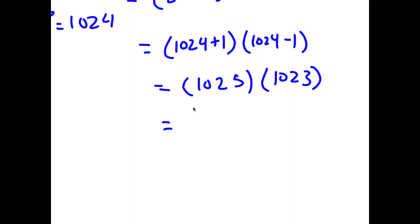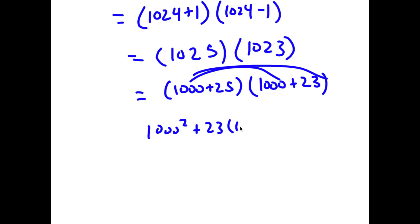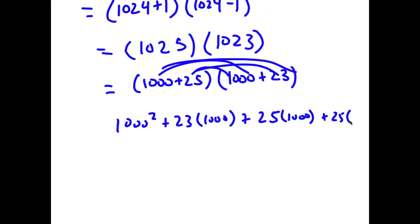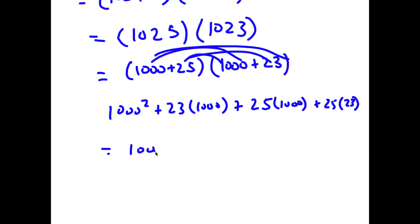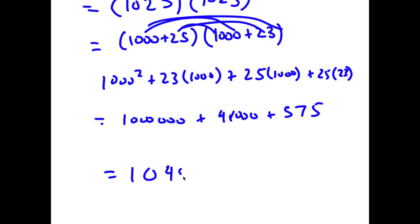To make this easier to solve, I'm going to rewrite these. I'll rewrite 1,025 as 1,000 plus 25, and 1,023 as 1,000 plus 23. Distributing 1,000 gives 1,000 squared plus 23 times 1,000. Distributing 25 gives plus 25 times 1,000 plus 25 times 23. This equals 1,000,000, plus 23,000 plus 25,000 which is 48,000, plus 575. And this equals 1,048,575.